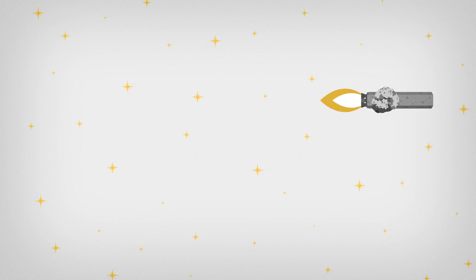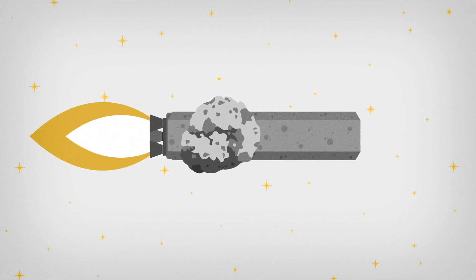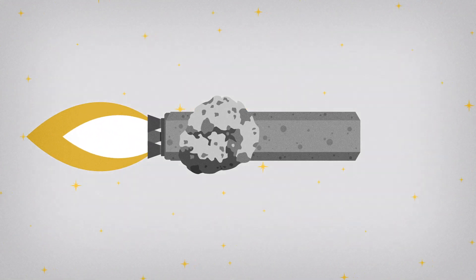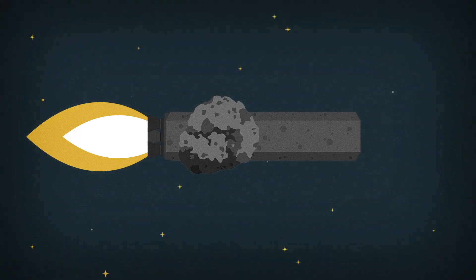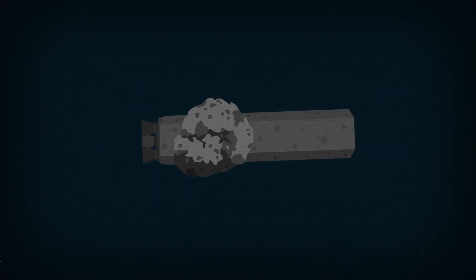If we survive the death of the Sun and colonize the galaxy, theoretically, we could survive until the last star in the universe goes out. After that, life becomes pretty impossible. Okay, so everything has an end.